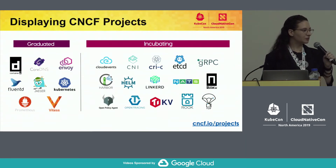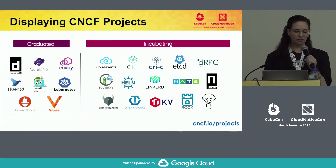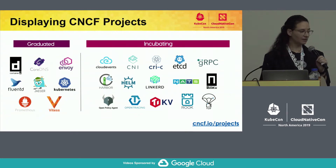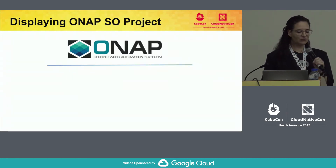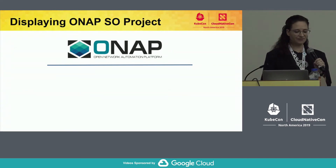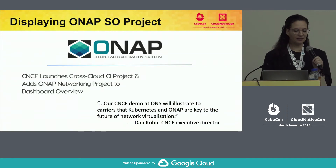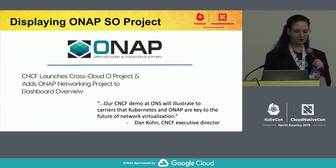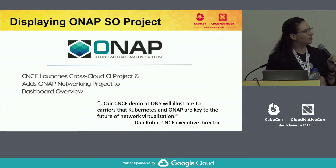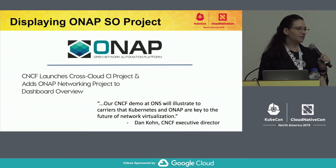The dashboard displays graduated and incubating projects, including eight graduated and 15 incubating. We also show the ONAP SO project V1 Amsterdam release. ONAP V1 was added at Open Networking Summit in Los Angeles, and since then ONAP has significantly improved their deployment with Kubernetes in their latest releases. The CNCF-CI team was able to reuse the knowledge learned while working on ONAP for the CNF Testbed initiative.